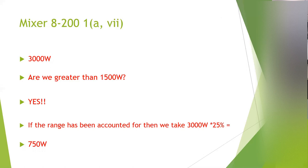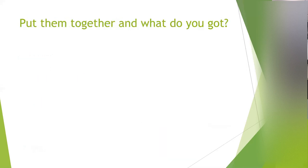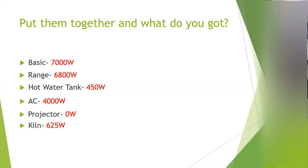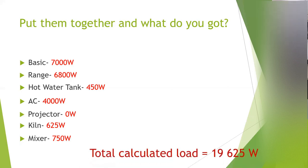Now we add all the loads together: basic load 7,000 W, range 6,800 W, hot water tank 450 W, air conditioner 4,000 W, projector 0 W, kiln 625 W, mixer 750 W. Adding all those together gives us a total calculated load of 19,625 watts.